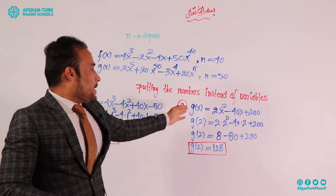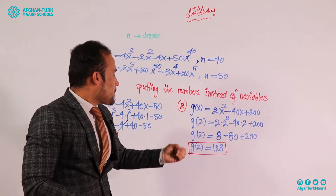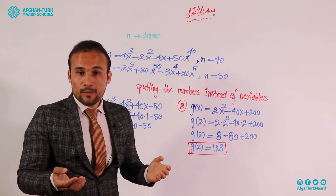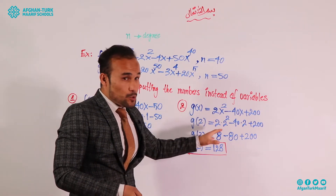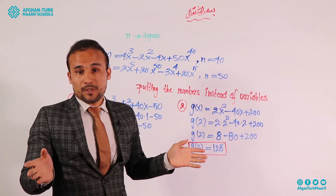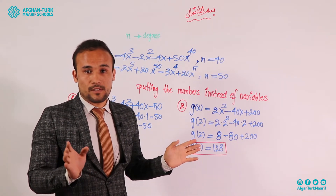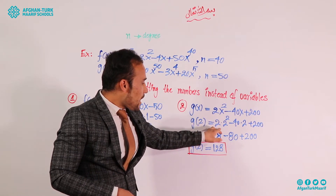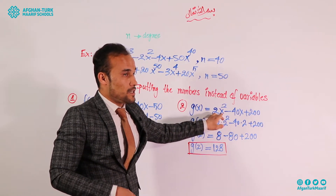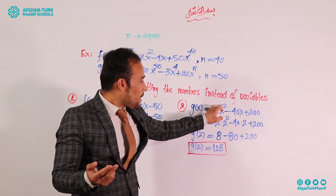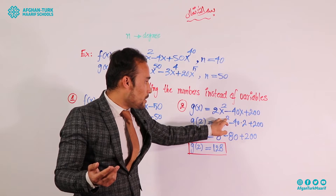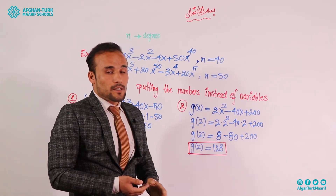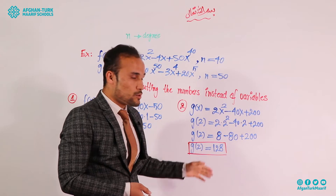In the next example, the polynomial is g(x) = 2x² − 40x + 200. We put 2 instead of x. We write all coefficients and exponents as they are, and replace x with 2. So g(2) = 2(2²) − 40(2) + 200. After simplifying, g(2) equals 128.